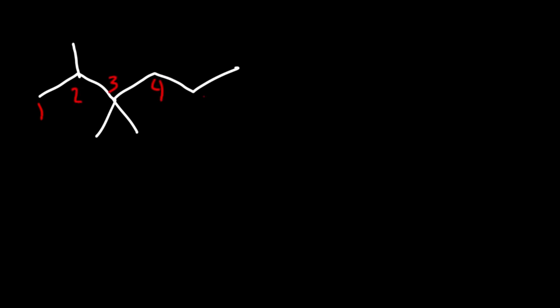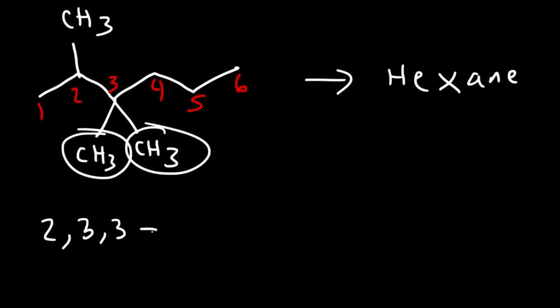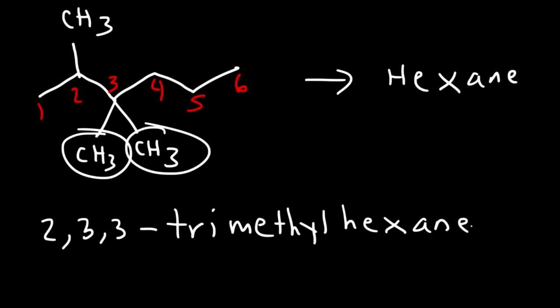Now what about this example? Go ahead and name that particular alkane. We're going to number it from left to right because it gives us the lower numbers. This time we have three methyl groups as opposed to two. The parent chain is still hexane. We have a methyl group on carbon two, and two methyl groups on carbon three. So we write 2,3,3-trimethylhexane — you need to write the three twice because there are two methyl groups on carbon three, and tri because there are three methyl groups total.